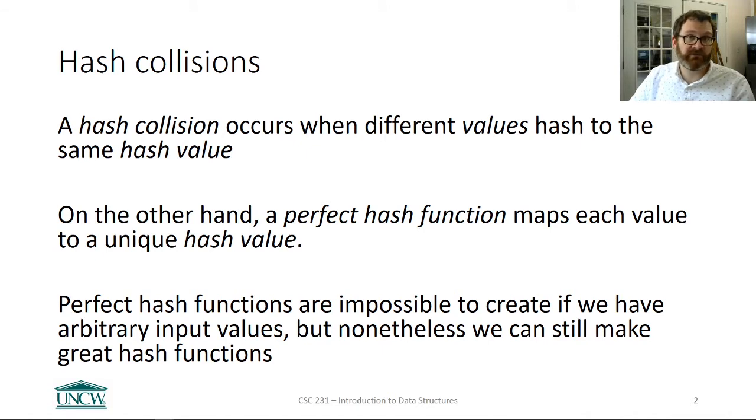First, formal definition: a hash collision occurs when different values hash to the same hash value. So we apply the hash function to something, say two integers like 5 and 25, but they hash to the same value. That's a hash collision.